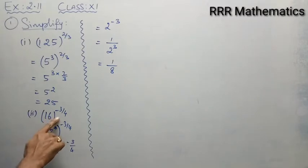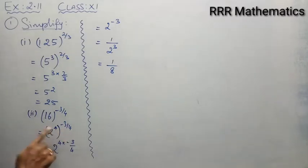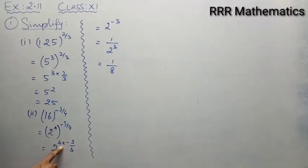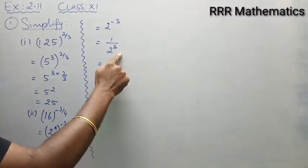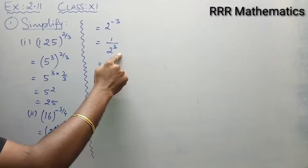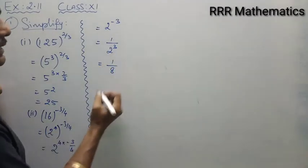To recap: 16 whole power minus 3 by 4. The base is 16; prime factorization gives 2 power 4. Multiplying the powers using the property: 2 power 4 × (−3/4). The 4s cancel, leaving 2 power minus 3. When it comes to the denominator, it becomes 1 by 2 power 3, giving 1 by 8.